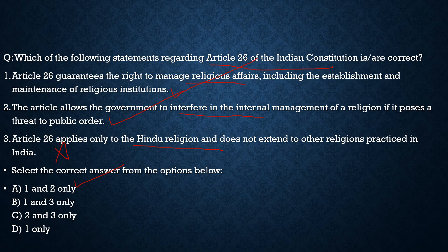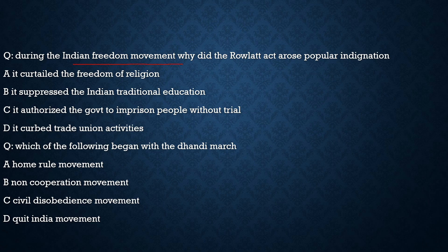Now let us move to the previous year questions section. The first question asks: During the Indian freedom movement, why did the Rowlatt Act arouse popular indignation? Option A — it curtailed the freedom of religion: No. Option B — it suppressed Indian traditional education: No. Option C — it curbed trade union activities: No. Option D — it authorized the government to imprison people without trial: this was the major reason, which also led to the huge protest at Jallianwala Bagh. The correct answer is option C.